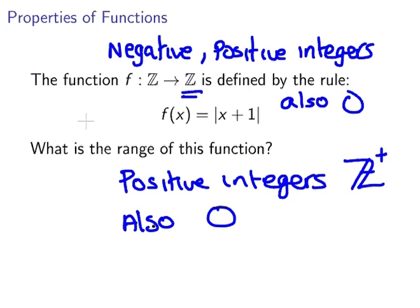0 is not actually a positive integer. It is not a negative integer, it is just 0. So the range of the values we actually might describe as a set. The range is the union of positive integers and 0.